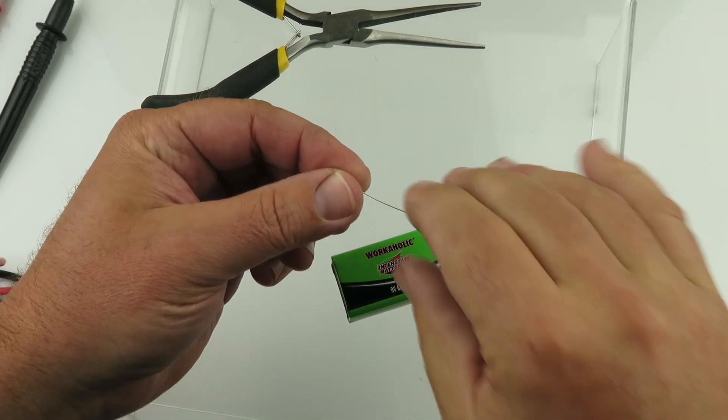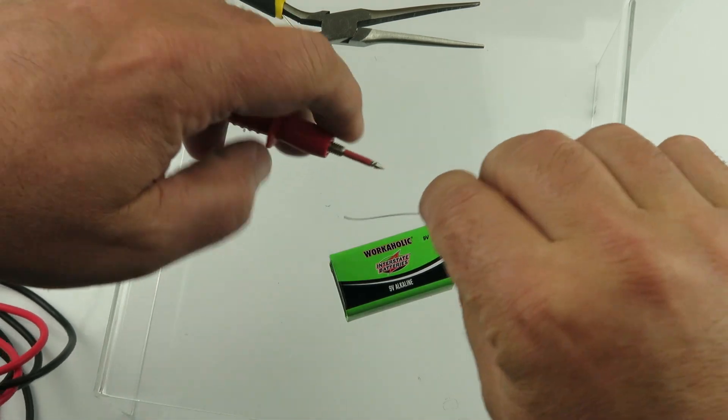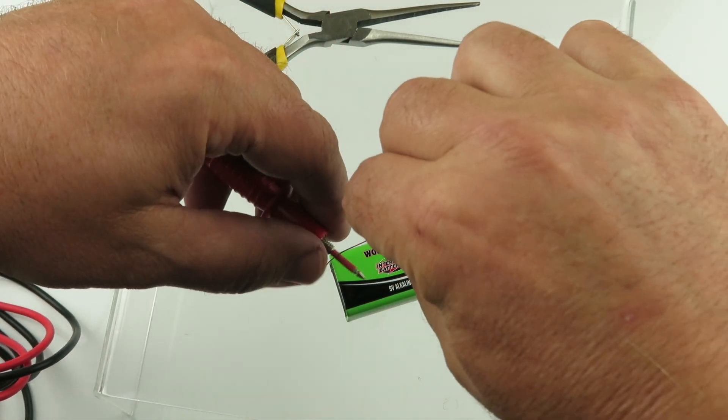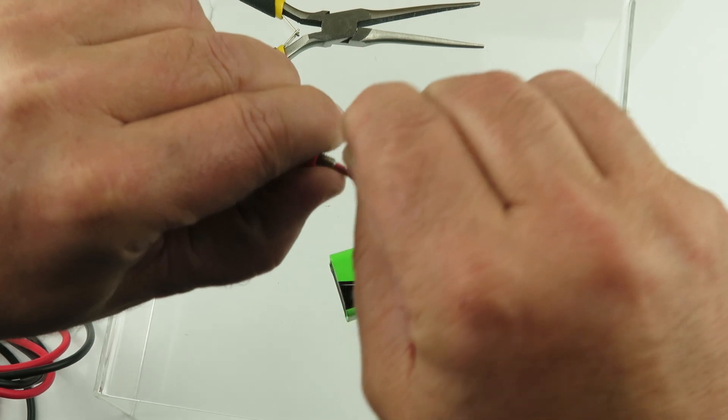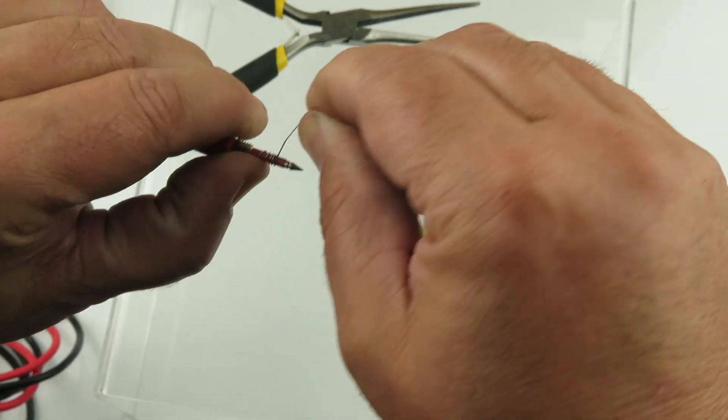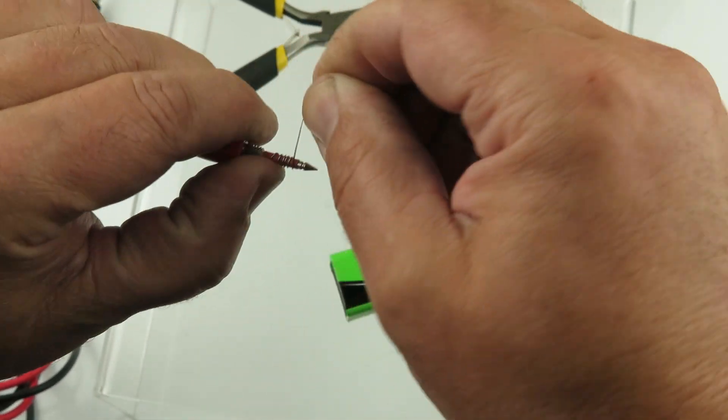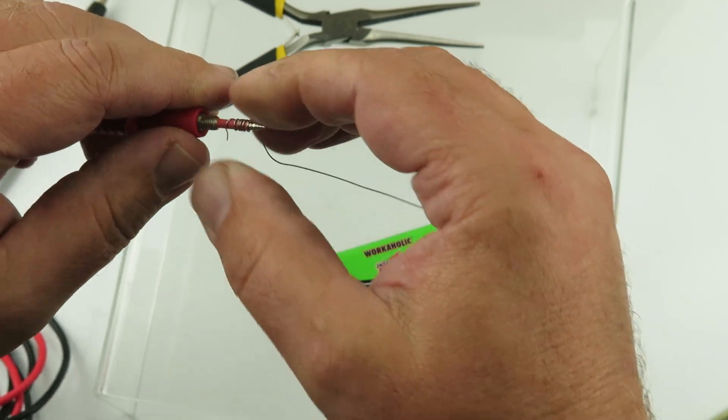Alright, let's make a little glow plug out of this wire. I'm just going to wrap a few turns around the electrical probe. One more. There we go.